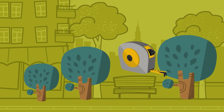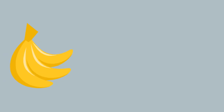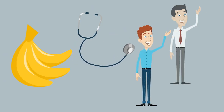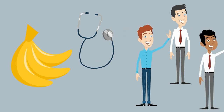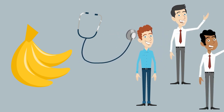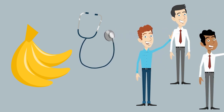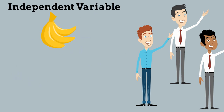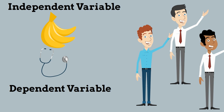Another example: eating 5 servings of bananas a week reduced the blood pressure of male patients. The number of bananas the men eat each week is your independent variable because it will change, and the blood pressure is the dependent variable — it is what you are measuring.